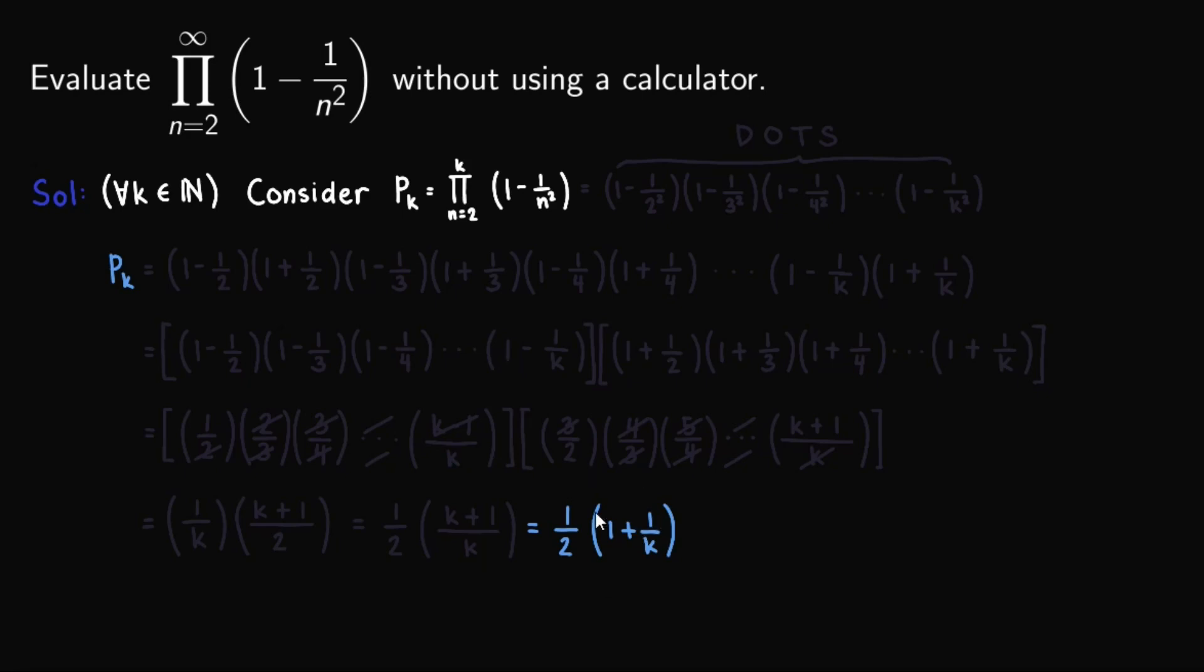So this will be our expression for our partial product. So we now have a simplified version of our partial product. But again, what we want to obtain is the value of the infinite product, not just the partial product. So what we can do is, focusing on this k out here to make this partial product, this expression out here, be same with this, what we can do is we can make k approach infinity.